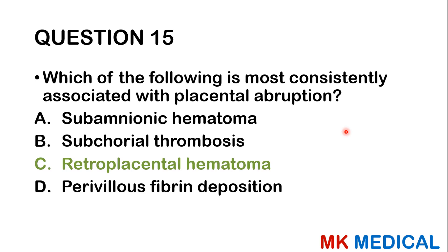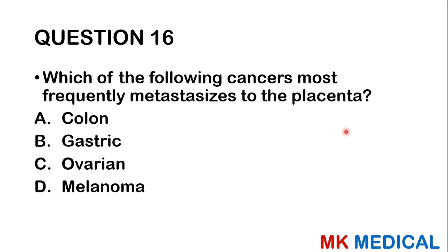Question sixteen: Which of the following cancers most frequently metastasizes to the placenta? A, colon; B, gastric; C, ovarian; D, melanoma. Most of you are probably going to guess C, ovarian cancer, which is false. Melanoma is actually the most common cancer that metastasizes to the placenta. The answer is D.